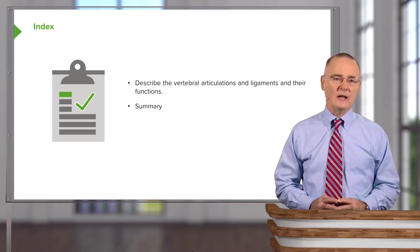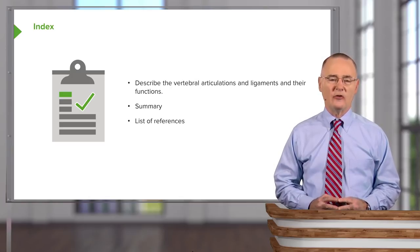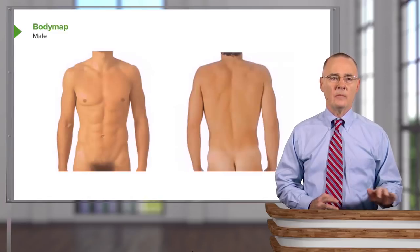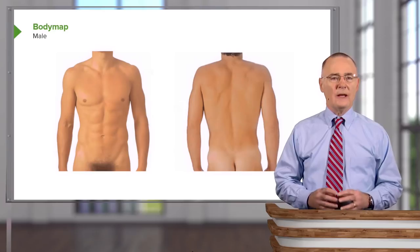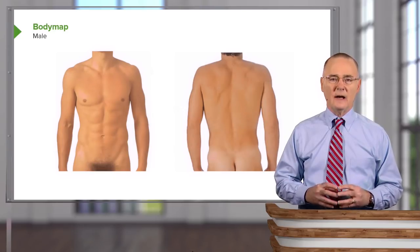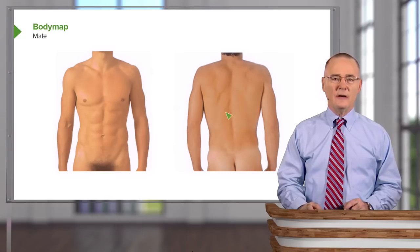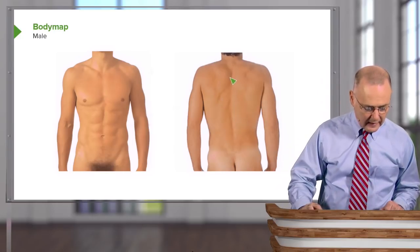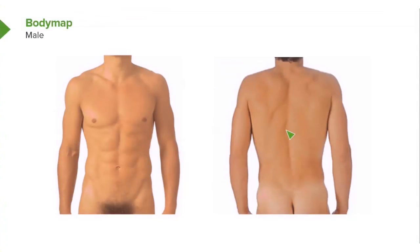You should also be able to describe the vertebral articulations and ligaments and their functions. Here is a body map to quickly orient us to the region of interest. We're going to focus on the posterior view, where you see a furrow right down the midline. This furrow represents the location of structural elements of our vertebral column — specifically, the spinous processes. We're going to look right along this area to define the segmentation of the vertebral column.